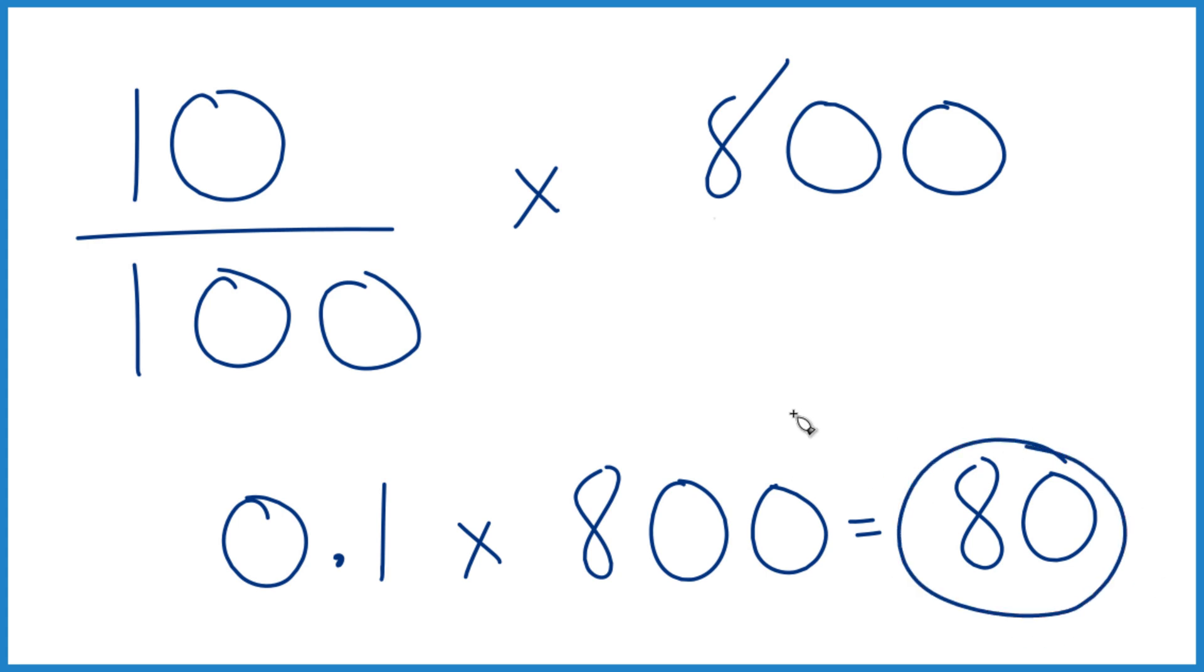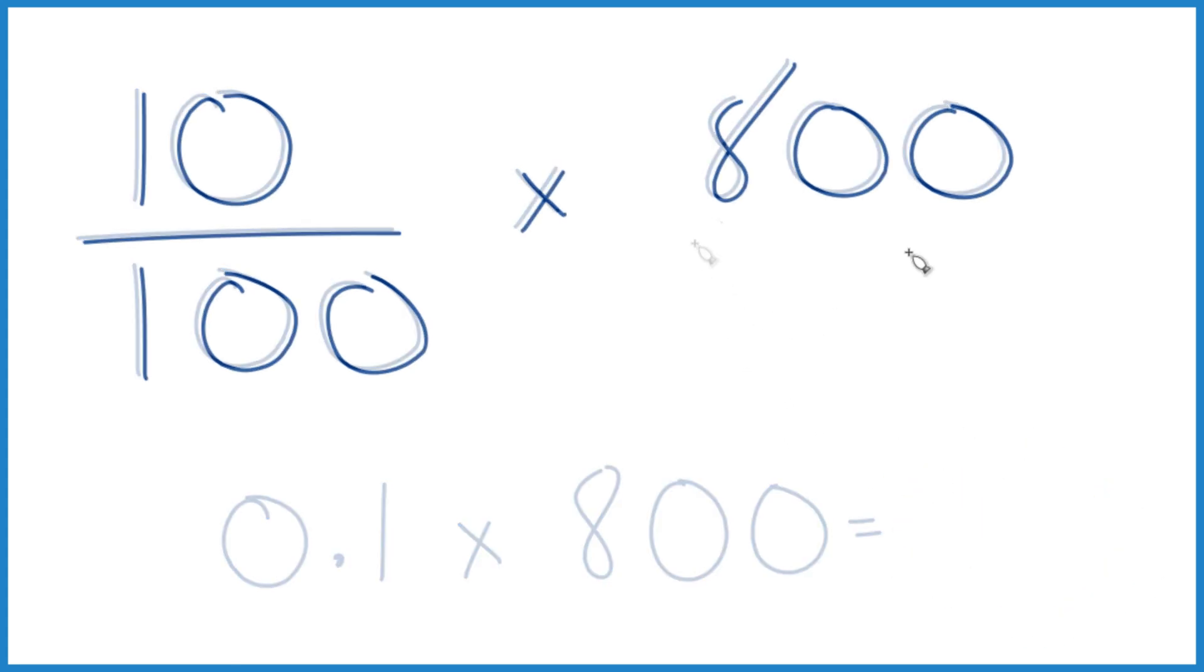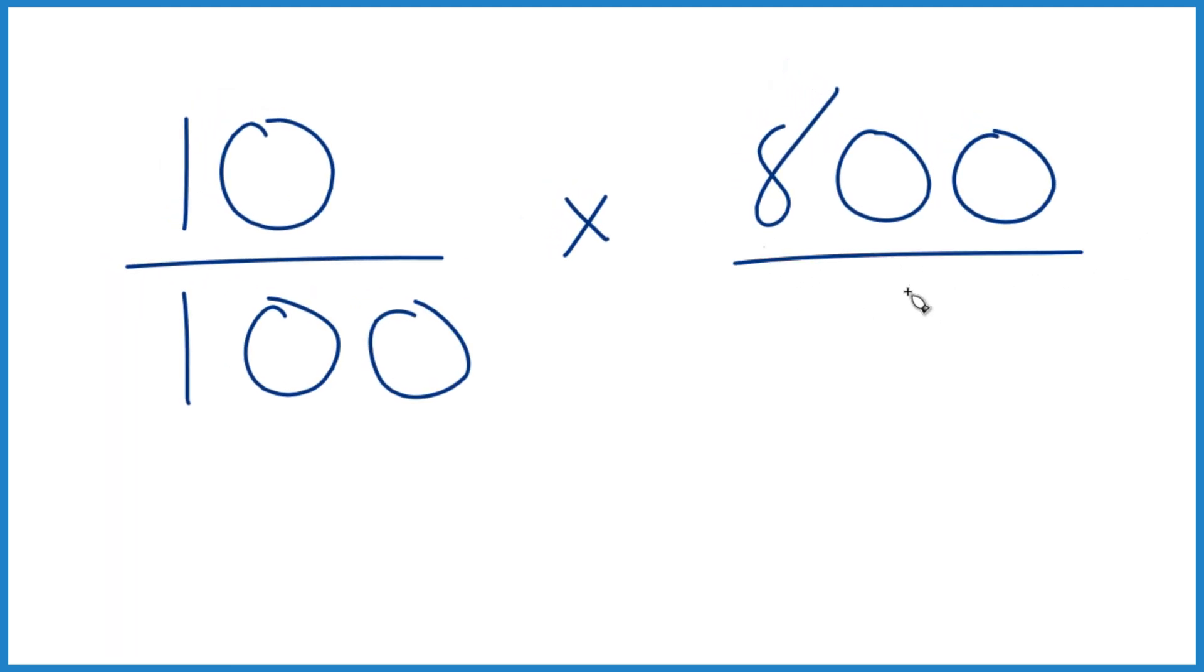Here's another nice way to think about it. Instead of 800, let's just call it 800 over 1. We're just dividing by 1. Still 800.